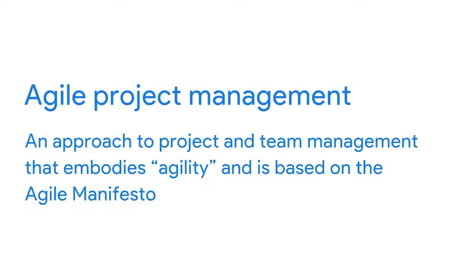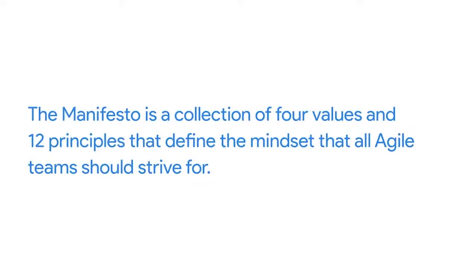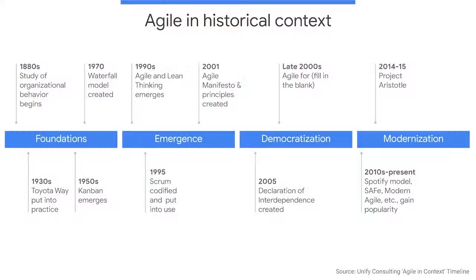But what do we mean by Agile project management? Agile project management is an approach to project and team management based on the Agile Manifesto. The Manifesto is a collection of four values and 12 principles that define the mindset that all Agile teams should strive for. In very basic terms, Waterfall is linear and sequential and does not encourage changing up the process once it has started. Agile, on the other hand, is iterative, flexible, and incorporates necessary changes throughout the process. Now, a bit of a history lesson so you can have a better sense of how and why Agile has become such a popular approach to project management.